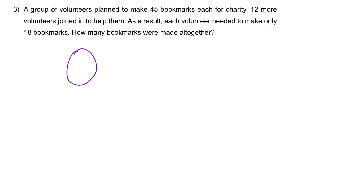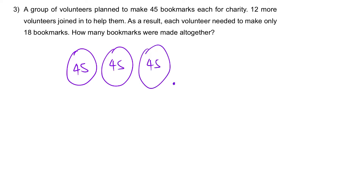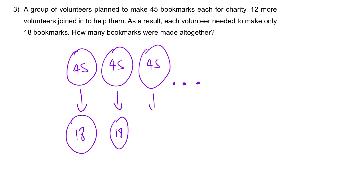At the beginning, I do not know how many people there are — that is something we need to figure out. However, each person makes 45, the second person 45, the third person also 45, and so on. Then 12 more people join, and suddenly each of them just needs to do 18. Now look at this reduction: each of them is reduced by how many bookmarks? From 45 to 18, that will be 27.